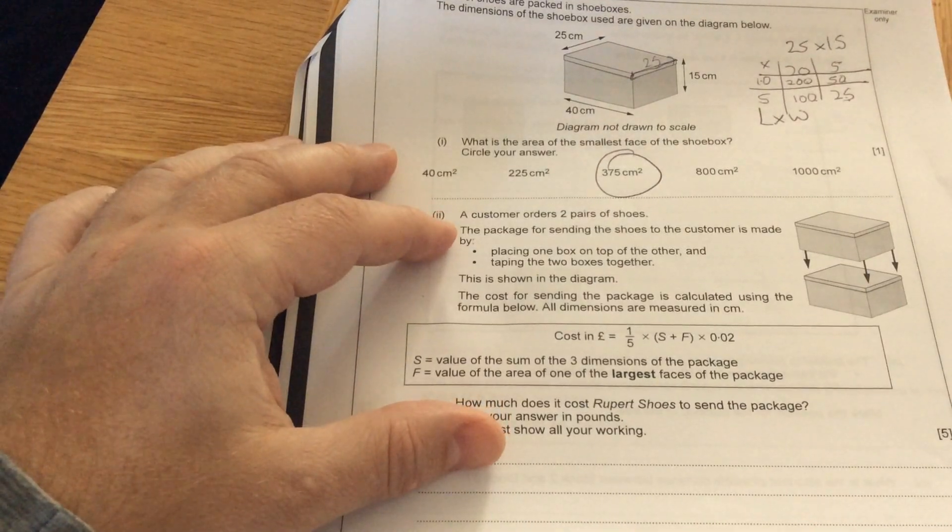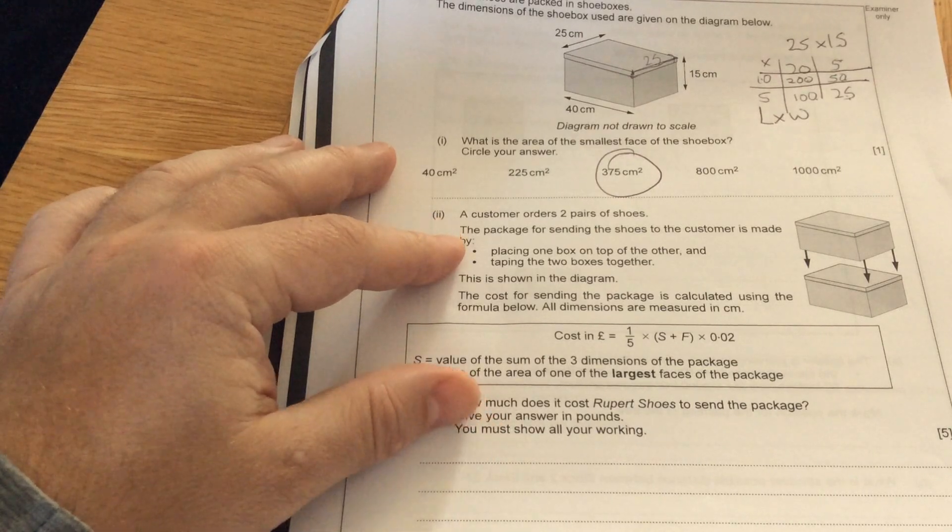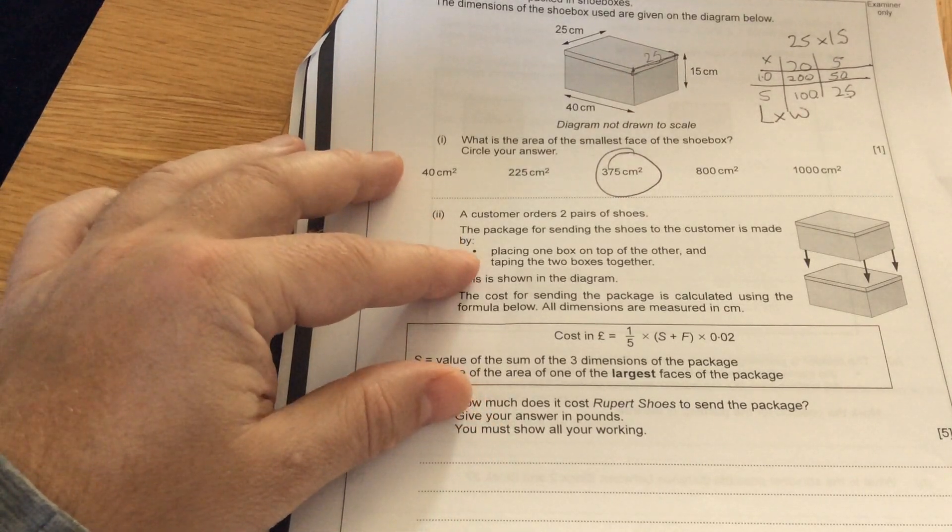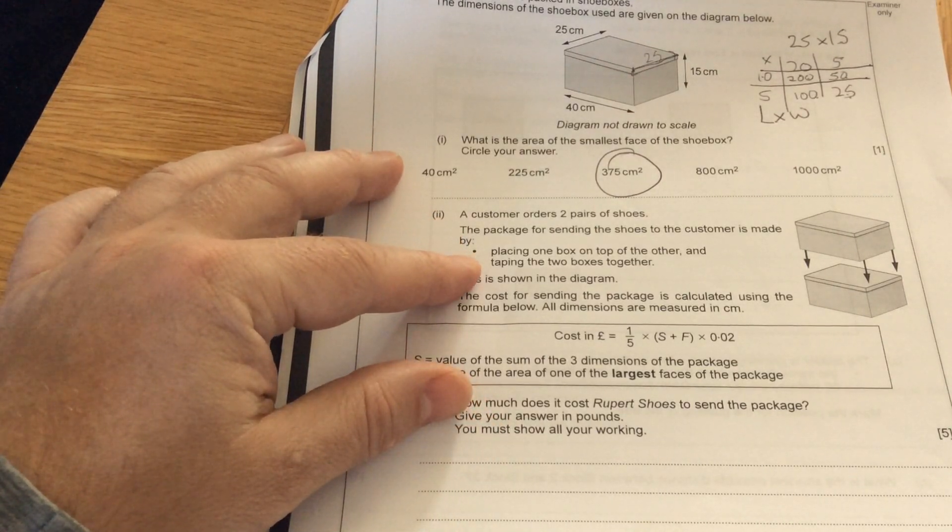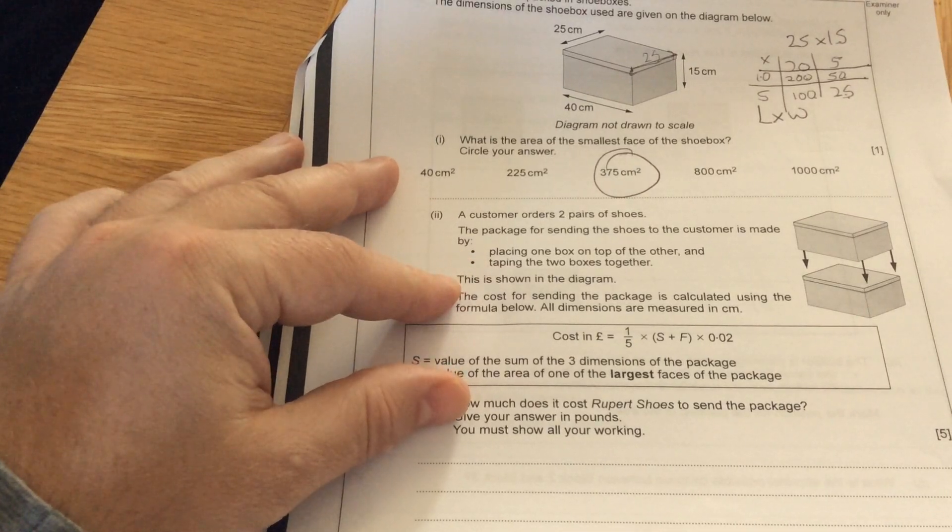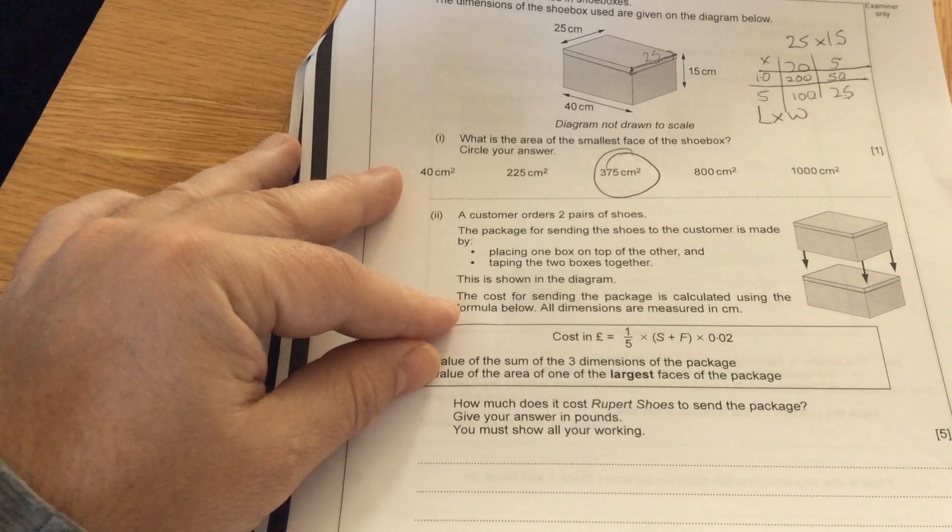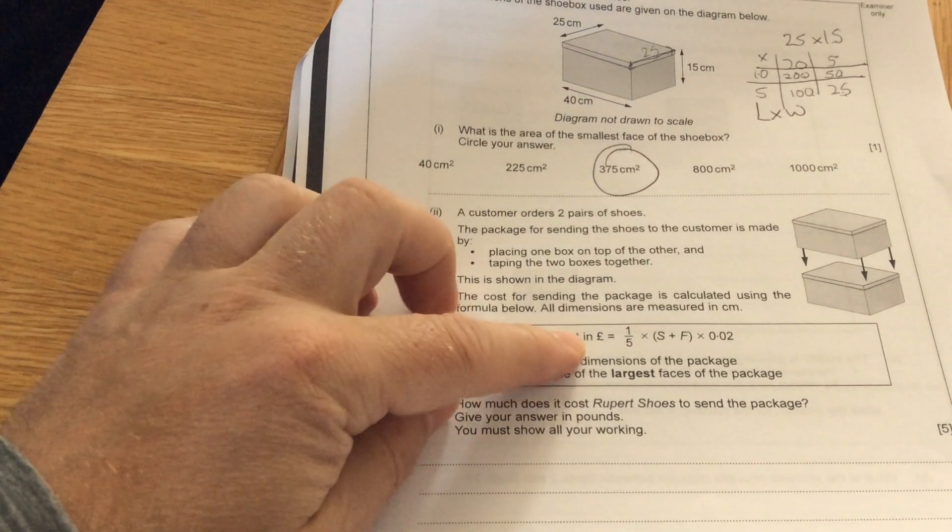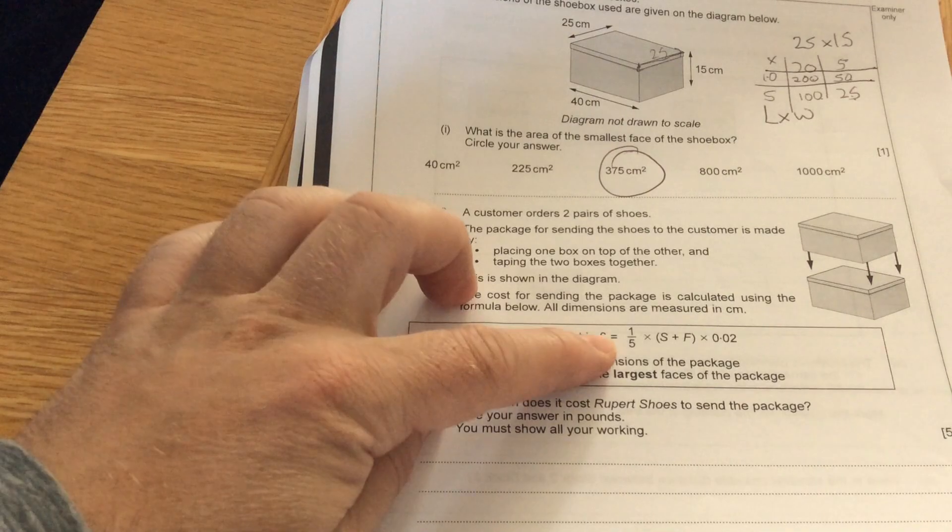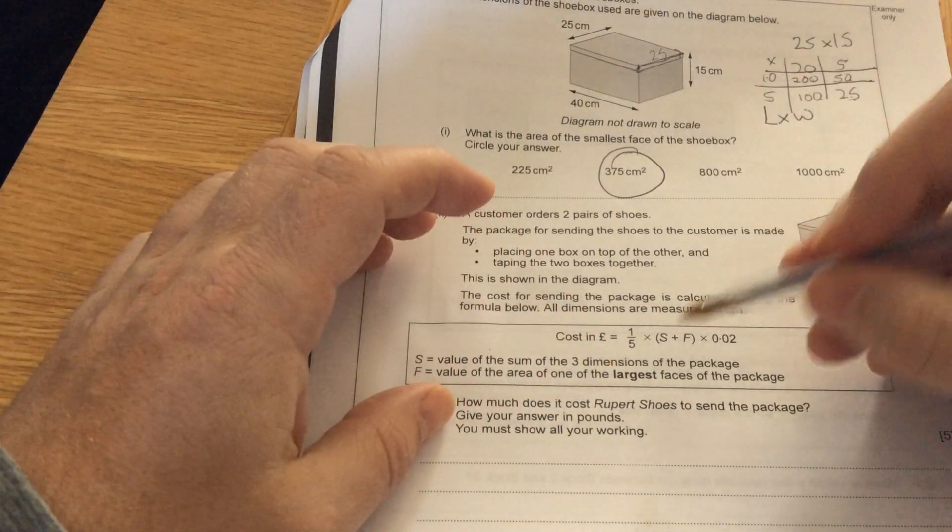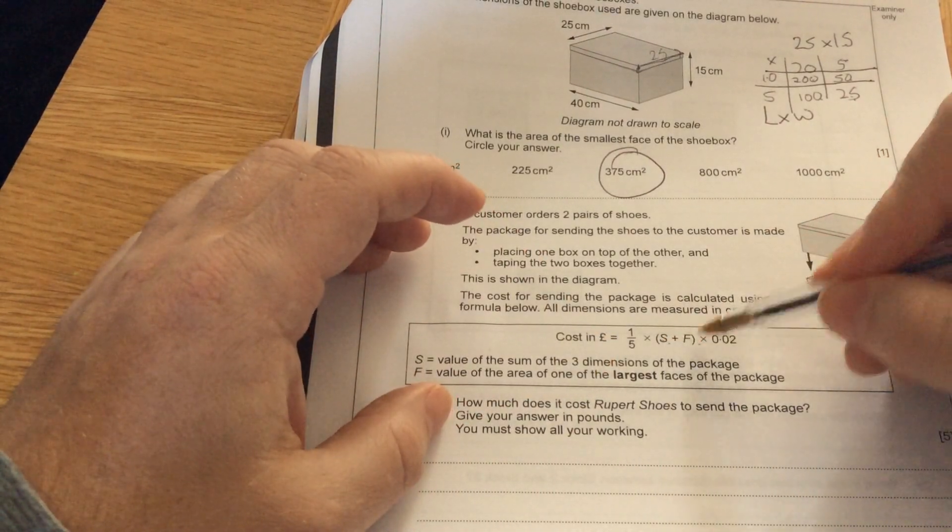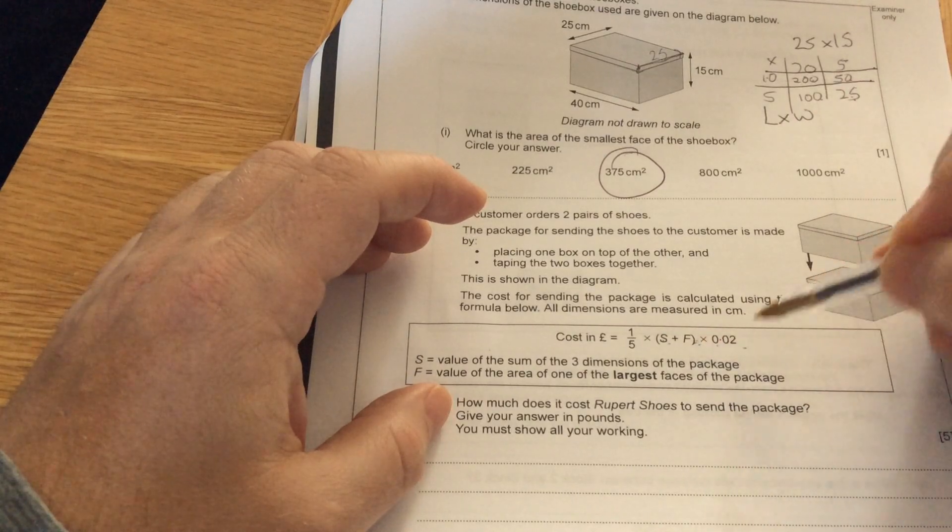Part B. The customer orders two pairs of shoes. The package for sending the shoes to the customer is made by placing one box on top of the other and taping the two boxes together. This is shown in the diagram. The cost for sending the package is calculated using the formula. All dimensions are measured in centimeters. The cost is one fifth multiplied by S plus S times F multiplied by 0.02.